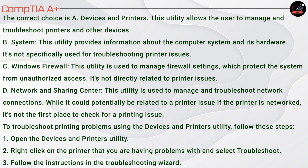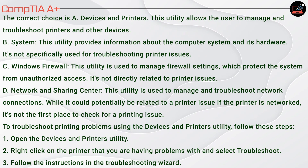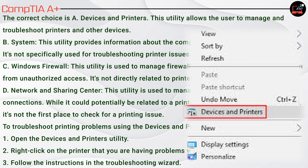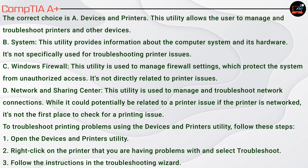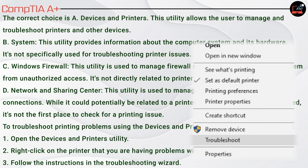To troubleshoot printing problems using the Devices and Printers utility, follow these steps: 1. Open the Devices and Printers utility. 2. Right-click on the printer that you're having problems with and select Troubleshoot. 3. Follow the instructions in the troubleshooting wizard.